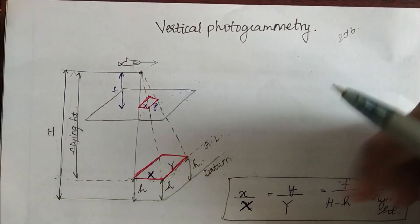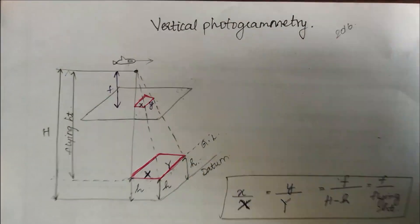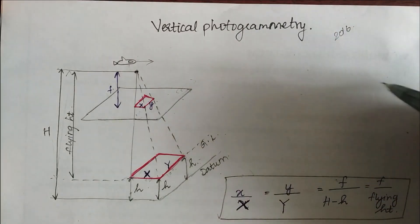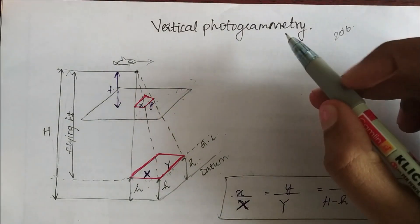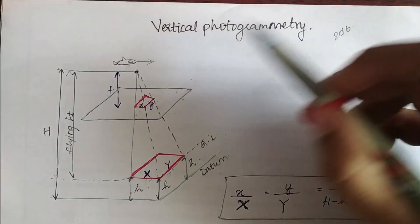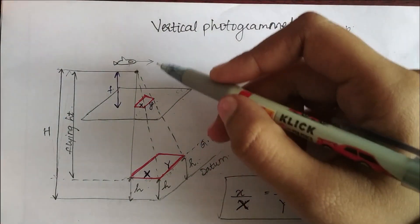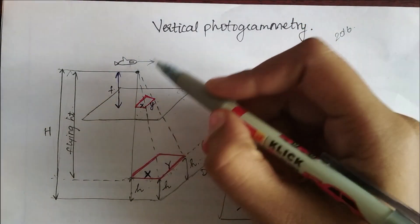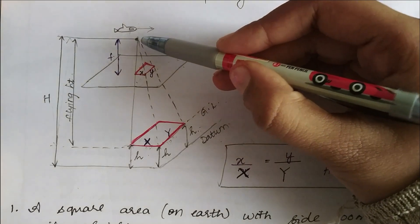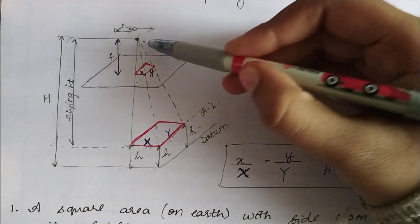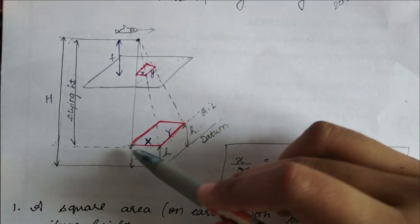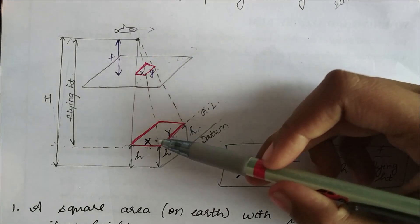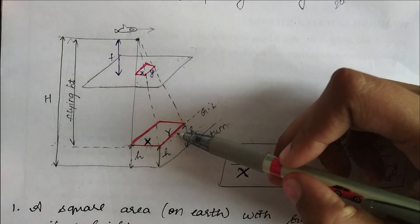First, vertical photogrammetry. Photogrammetry is where you find the dimensions of an object or an area with respect to a photograph. Vertical photogrammetry means you're taking the photo in the vertical direction — say you're flying in an airplane with a camera, taking the photo at a point, covering a rectangular area of dimensions capital X and capital Y.